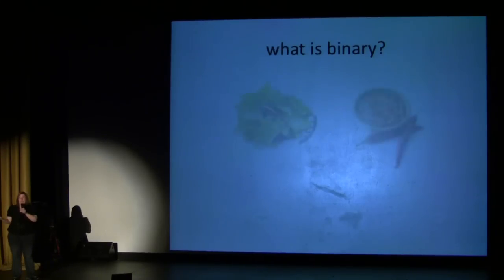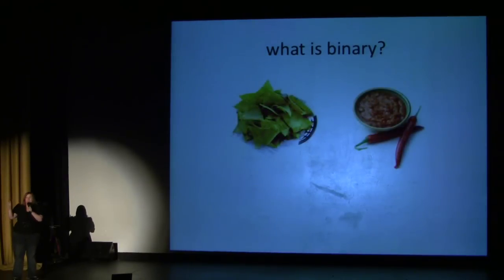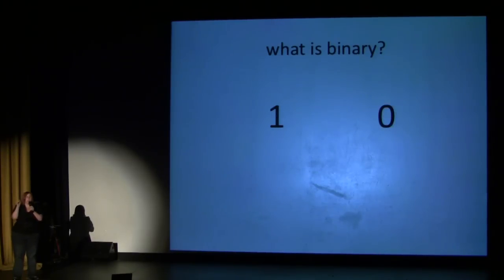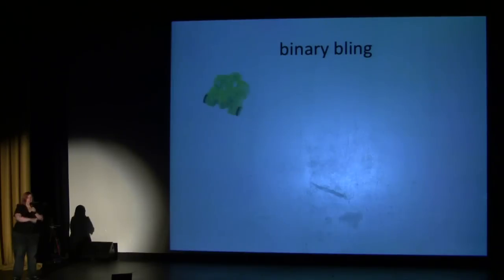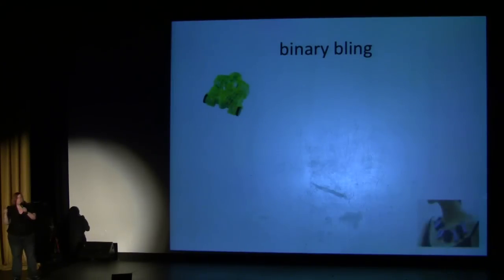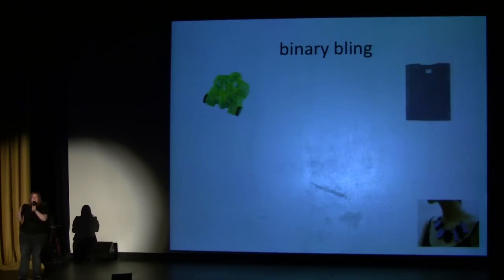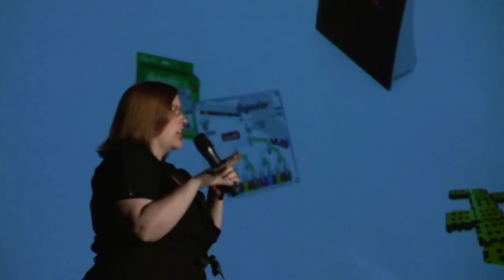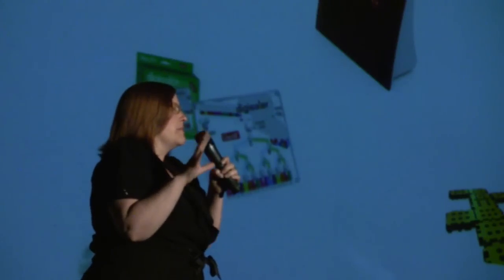First, you have to understand what binary is. Binary is basically about the relationship between two entities. And then that got taken a step further when it was translated into technology, which is on and off switches that computers read as represented by the numbers one and zero. Now, binary, for nerds, is sort of like this cachet thing. So, over the years, binary bling has sprung up — there's t-shirts, toys, jewelry, clocks. There's almost anything you can imagine that's been translated into binary.